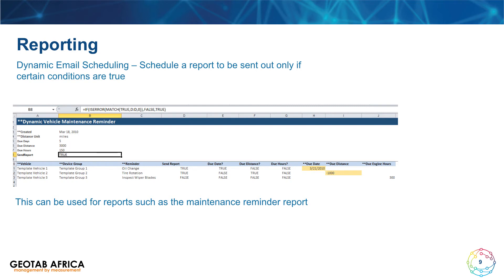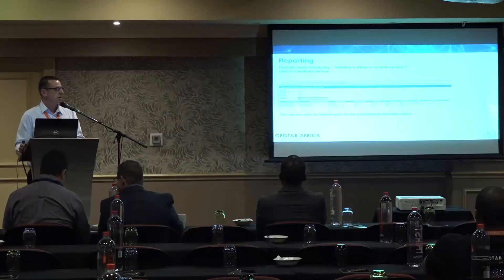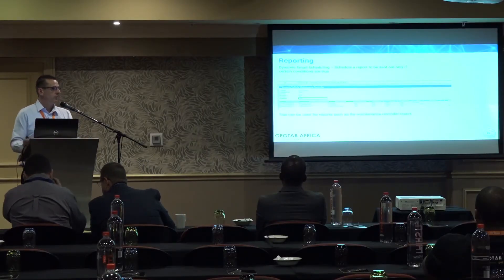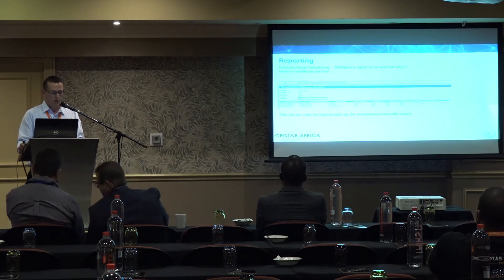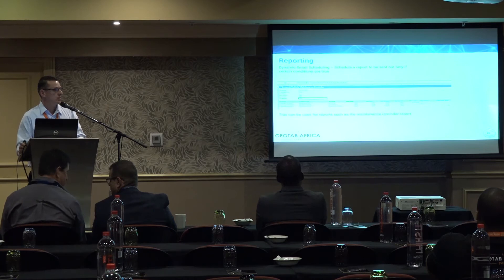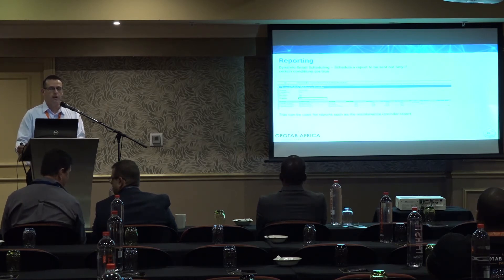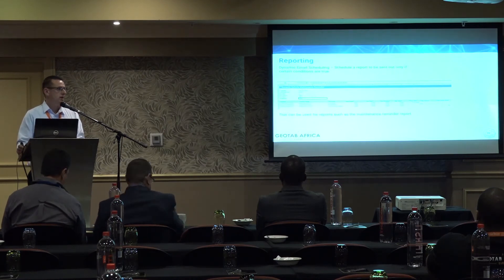There's also a way to set up reports to be dynamically sent when a certain condition is met. Think of things like maintenance reminder rules — you can set up a rule so that a report only sends when a vehicle is coming up to a service. Another way might be a watchdog report that sends out an alert when a vehicle has been offline for a certain amount of time, indicating there may be a problem with one of the devices.